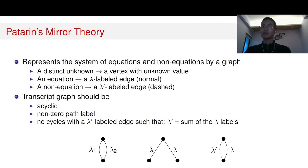So those are actually the properties that are used to define the bad transcript. However, Mirror Theory was designed for block cipher based constructions. So in order to use it on the permutation based constructions, we need to generalize the idea.